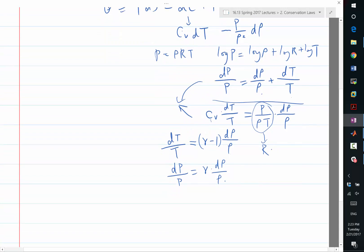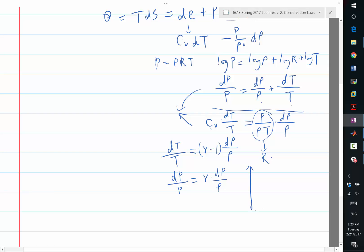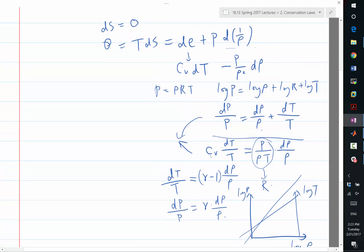So if you can draw log of rho versus log of p or log of T on a diagram, they all look linear but with different slopes.